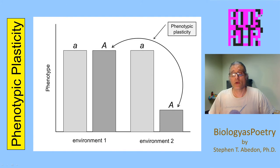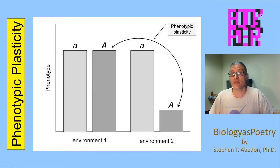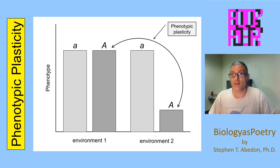Another way to consider how organisms can vary from environment to environment is in terms of phenotypic plasticity. With phenotypic plasticity, you have one genotype, but you have potentially more than one phenotype that could result from that genotype depending upon environmental conditions. This essentially means that you've got alleles that in one environment display one phenotype and under another environment display a different phenotype.